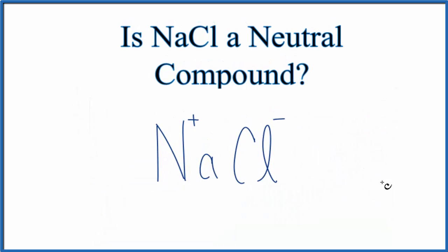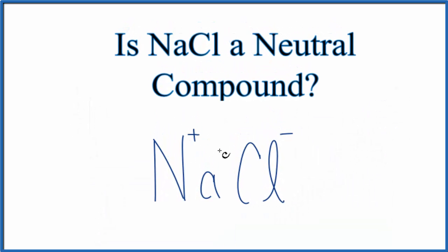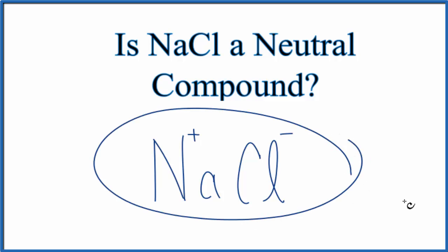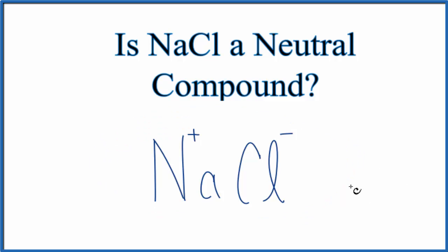So even though we have a positive and a negative, if we add that up, we have a net charge of 0. So NaCl, the compound, is going to be neutral because it has a net charge of 0. Let's take a quick look at why we have this positive and negative here.